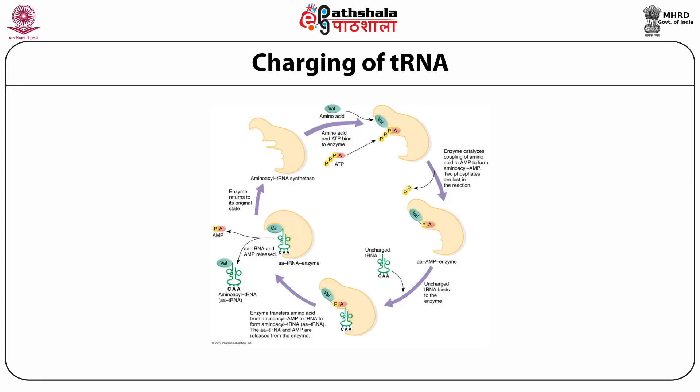In the first step, the amino acid binds to the enzyme; the enzyme catalyzes the coupling of the amino acid to AMP to form aminoacyl-AMP, and two phosphates are lost in the reaction. Then aminoacyl-AMP–enzyme complex and uncharged tRNA bind to each other. The enzyme transfers the amino acid from aminoacyl-AMP to tRNA to form aminoacyl-tRNA (AA-tRNA). The AA-tRNA and AMP are released from the enzyme, and the enzyme returns to its original state, ready to bind the next amino acid.